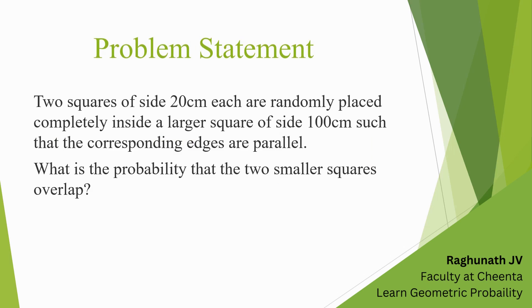The problem statement is as follows. Two squares of side 20 cm each are randomly placed completely inside a larger square of side 100 cm such that the corresponding edges are parallel. What is the probability that the two smaller squares overlap?